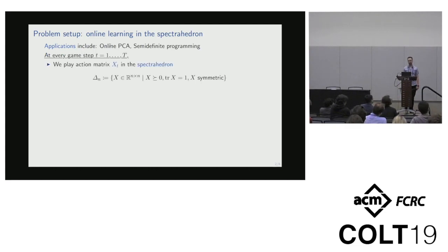Like every online learning problem, we play a game in stages, and at stage T, we take an action XT, which is a symmetric matrix in a set called the spectrahedron—a set of positive semi-definite matrices with trace one. This is the natural matrix analog of the simplex, because the eigenvalues of a matrix in the spectrahedron are positive and sum to one, so they lie exactly on the simplex.